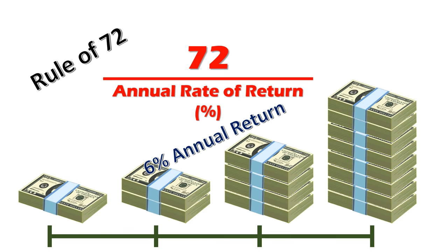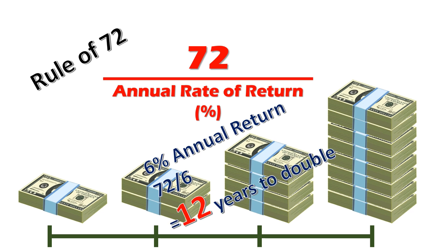So let's say you have something earning six percent annual return — you take 72 and divide it by six, and you would find that account would take 12 years to double. So every 12 years your money would double: 12 years from a thousand to two thousand, twelve more from two to four, and twelve more from four to eight.